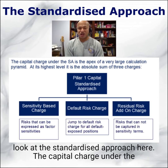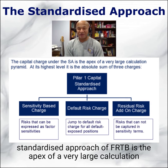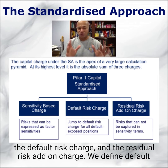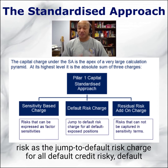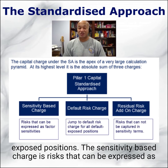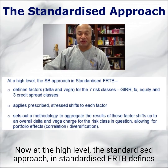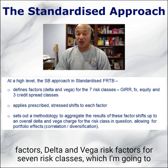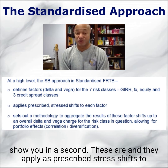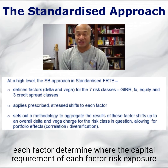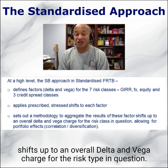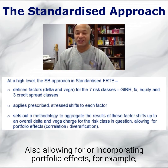We're going to look at the standardized approach here. The capital charge under the standardized approach of FRTB is the apex of a very large calculation pyramid — that's possibly an understatement. At its highest level, it is the absolute sum of three charges: the sensitivity-based charge, the default risk charge, and the residual risk add-on charge. We define default risk as the jump-to-default risk charge for all default credit-risky, default-exposed positions. The sensitivity-based charge covers risks that can be expressed as factor sensitivities. At the high level, the standardized approach defines delta and vega risk factors for seven risk classes, and it applies prescribed stress shifts to each factor to determine the capital requirement of each factor risk exposure. It sets out a methodology to aggregate the results of these factor shifts up to an overall delta and vega charge for the risk type in question, also incorporating portfolio effects — for example, effects of correlation in a diversified portfolio.